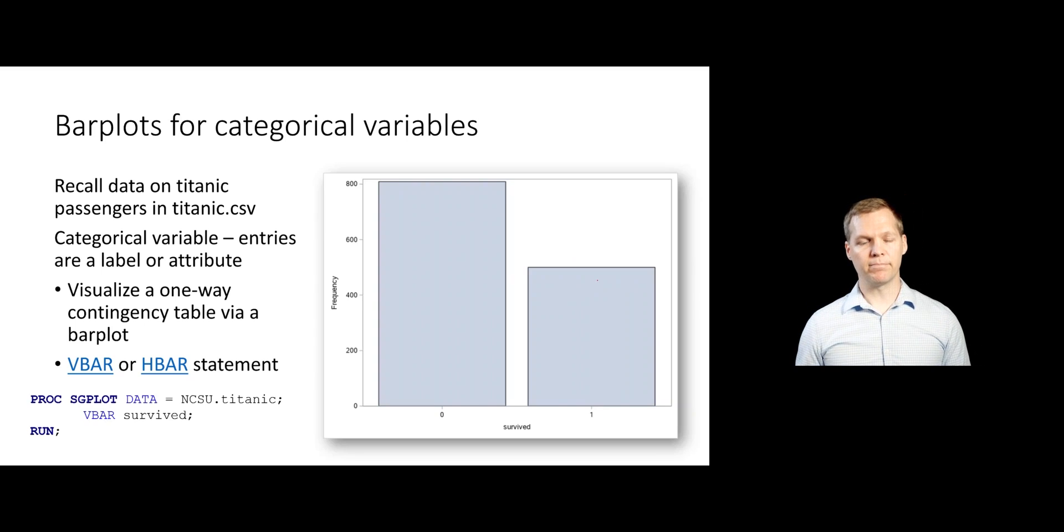We're going to visualize that one-way table with a single bar plot. We can either make that a vertical or a horizontal bar plot. Personally, I like vertical ones a little bit better, but to each their own. And so here's how we would create a bar plot for the survived variable. We're just going to use the VBAR statement and specify the variable survived. And now this takes that one-way contingency table and puts it into bar form. A little bit easier to read and compare these two groups.